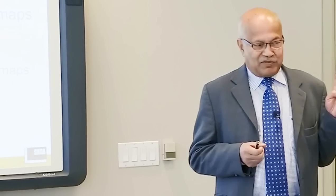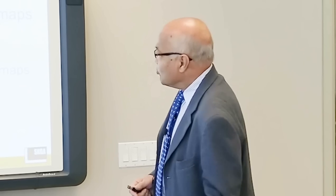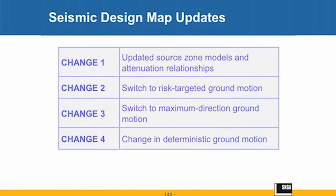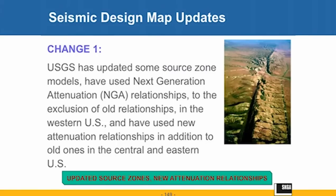Four changes have brought us from there to here — from the MCE maps of ASCE 705 to the MCER maps of ASCE 710. Those four changes are listed in this table, but I want to take the changes one by one, so I am not going to spend time on the table itself. Change number one is best described as routine U.S. Geological Survey business.